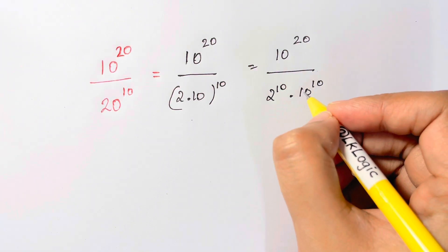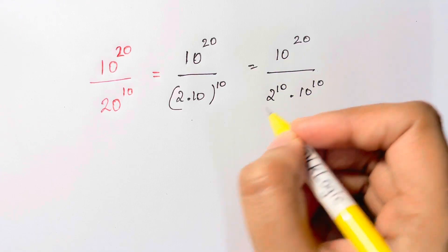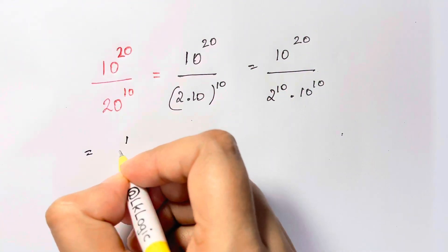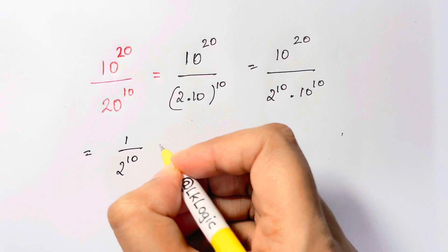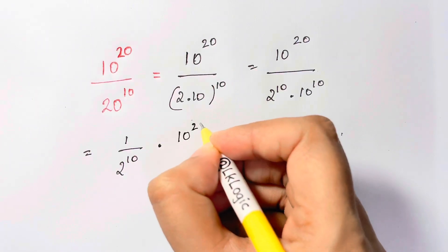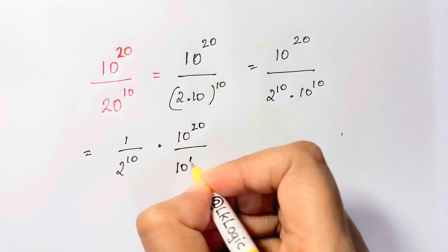Now let's see, we have same bases here, so we are going to club that. So first we have 1 over 2 to the power of 10 times 10 to the power of 20 over 10 to the power of 10.